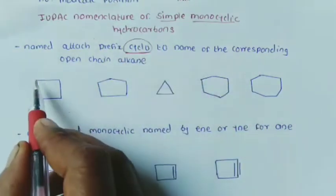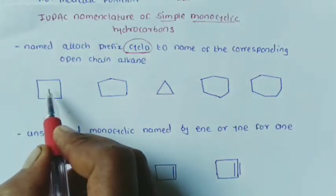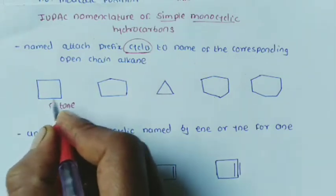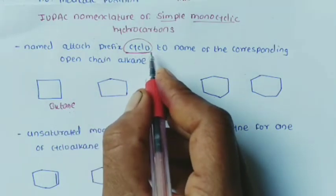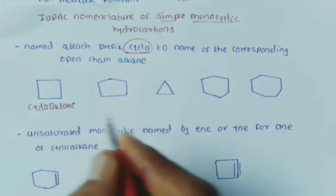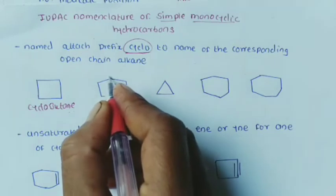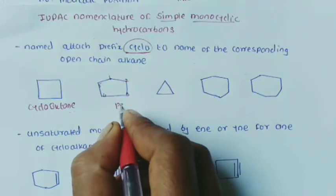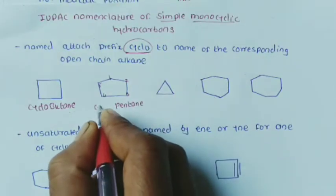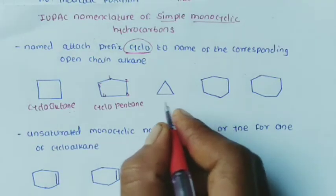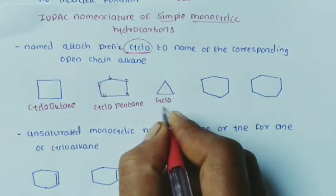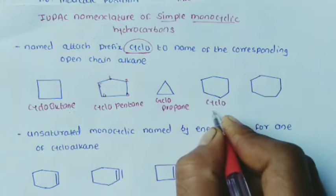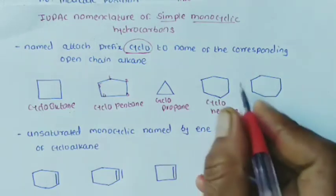For example, a 4-carbon cyclic compound is named cyclobutane. A 5-carbon ring is cyclopentane. A 3-carbon ring is cyclopropane. A 6-carbon ring is cyclohexane, and a 7-carbon ring is cycloheptane. The rule is: find the number of carbons in the ring, name the corresponding open-chain alkane, and add the prefix 'cyclo' before it.